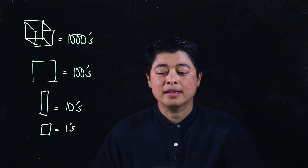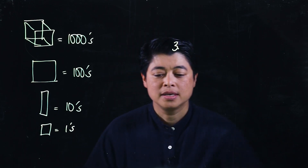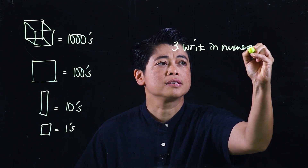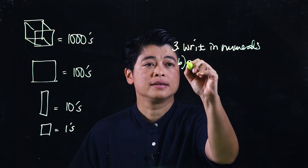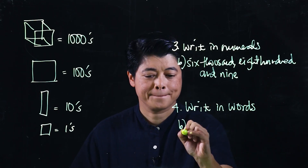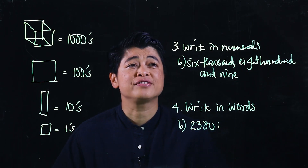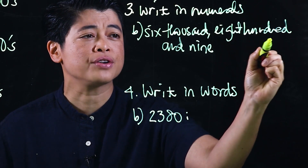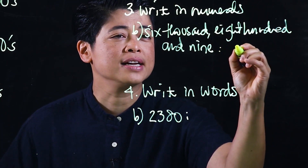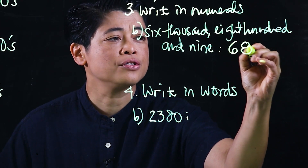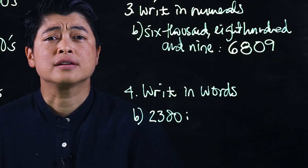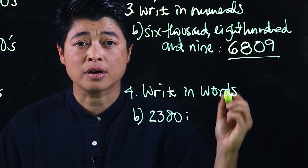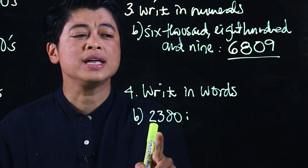The problems will come from page 11. I've selected two problems. Problem number three says write in numerals — six thousand eight hundred and nine — so therefore this is 6809. The kids don't need to put commas, so let's not teach them to write with commas.